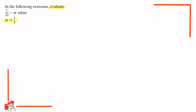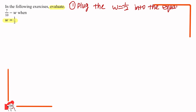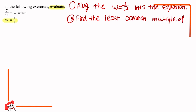For this question there are three steps. The first step is to plug the value of w, which is equal to 1 over 2, into the equation. Then, since there will be two fractions with different denominators, the second step is to find the least common multiple of the denominators. The third step is to simplify the answer.